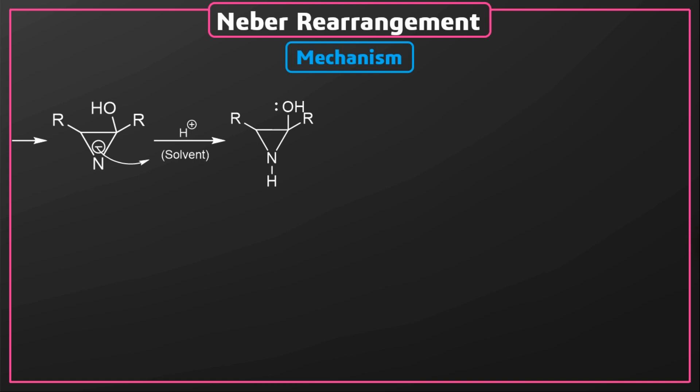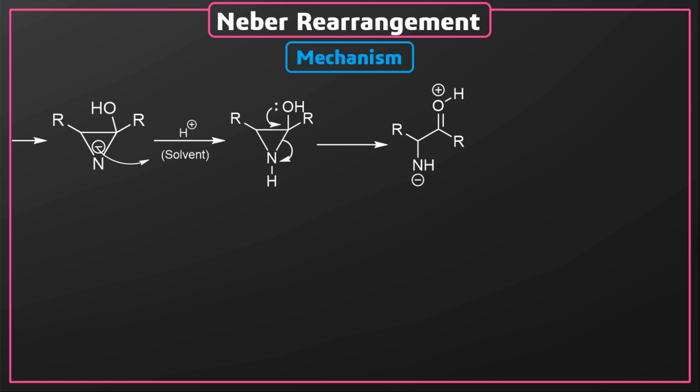An uncharged intermediate is formed. In this intermediate, the carbon atom carries two highly electronegative groups — a hydroxyl group and an amine group — making the carbon-nitrogen bond unstable. The lone pair of the hydroxyl group then acts to form a carbonyl group, and as a result the carbon-nitrogen bond breaks, with the bond electrons moving to nitrogen.